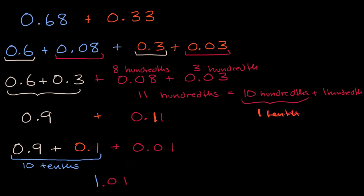As I keep mentioning, in future videos we're going to learn maybe faster ways of doing this — ways you might be able to do a little bit more automatically. But it's really important to think about what we just did here, and how we were able to see that eleven-hundredths is the same thing as a tenth and a hundredth, then take that tenth and add it to the nine-tenths we already had to make a whole. In the future we're going to be doing things like carrying with decimals, but this is essentially what is happening conceptually underneath. It's really important that you get a sense of that before you learn the faster methods.